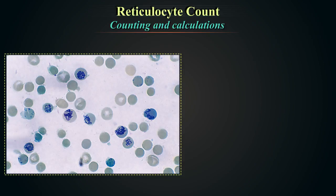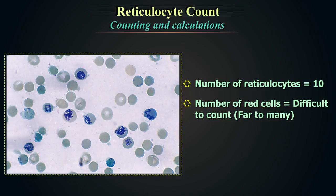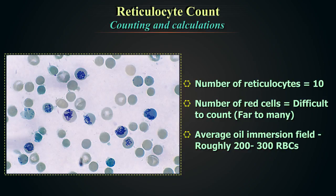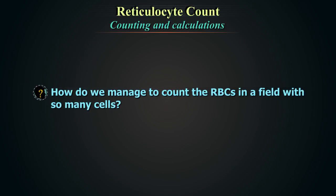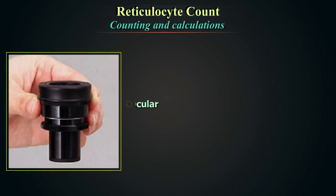Counting reticulocytes in a field is straightforward, but counting the large number of red cells in the same field is difficult because an average oil immersion field will have roughly 200 to 300 red blood cells depending on the RBC count in the sample. The logical answer is to reduce the field where you count red blood cells.